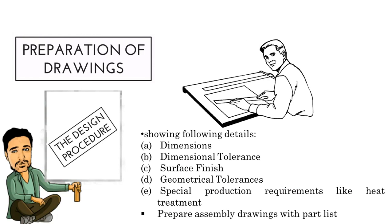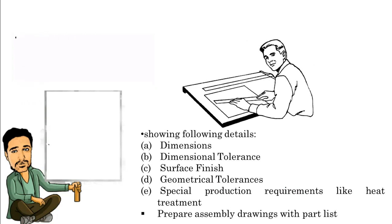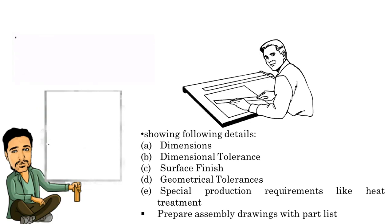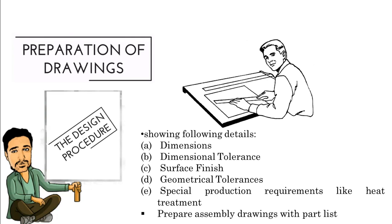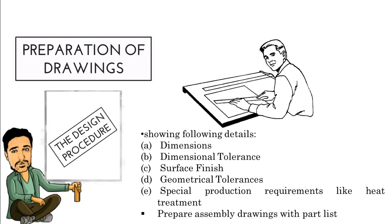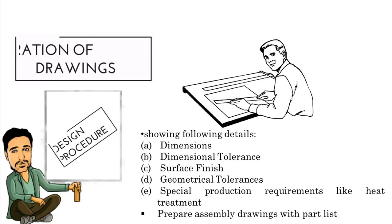The next step is showing the dimensions, tolerances, surface finish, and geometrical tolerances on the drawings. The draftsman has a very crucial job to display everything in a nutshell in the drawings. As this drawing is going to go to the production department, he needs to show the special production requirements like heat treatment. He needs to prepare the assembly drawings with the part list.